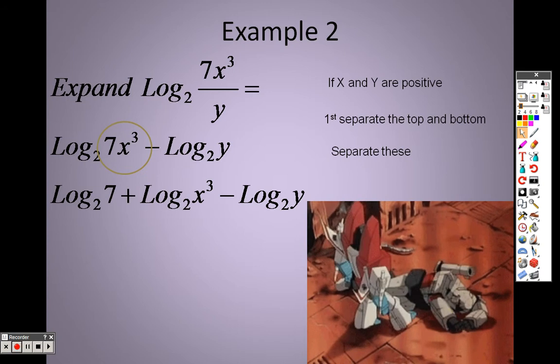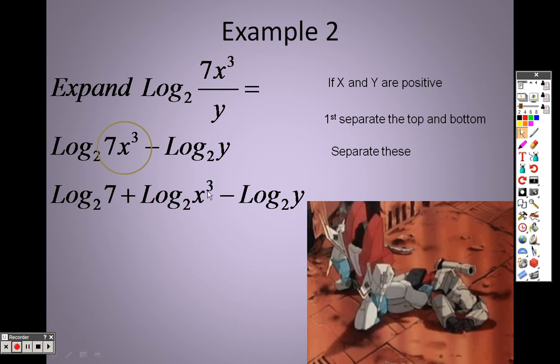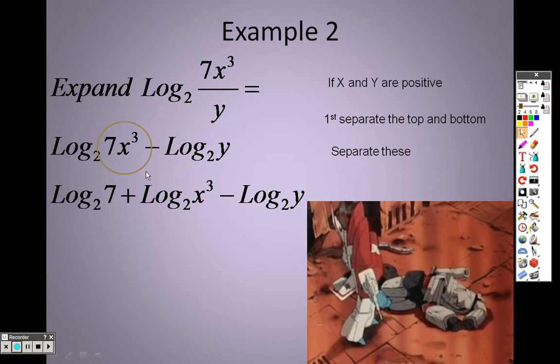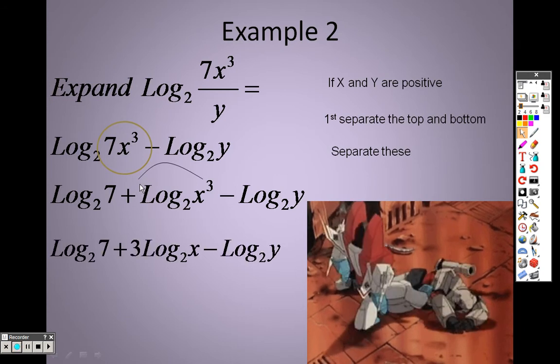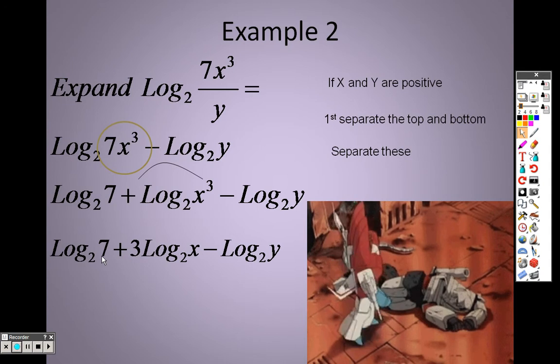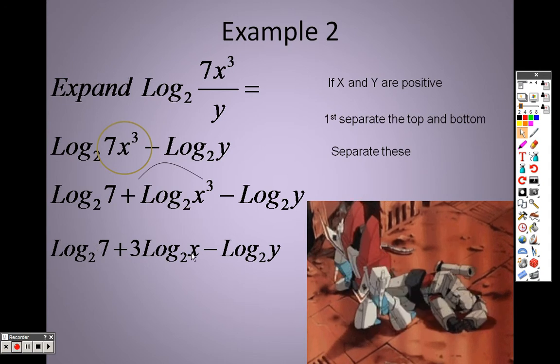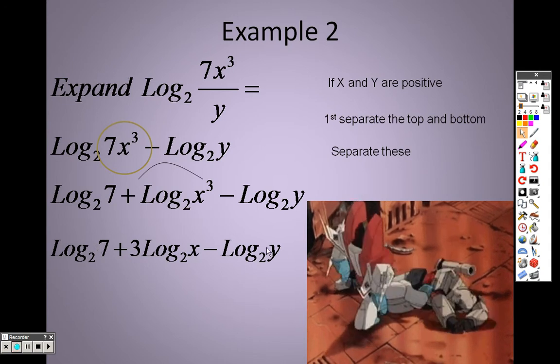That last property states that if we have an exponent inside a log, I can move that out to the front. So basically I'm going to take that 3, move it out into the front, and now I just have a 7 all by itself. I just have an x all by itself. I just have a y all by itself.